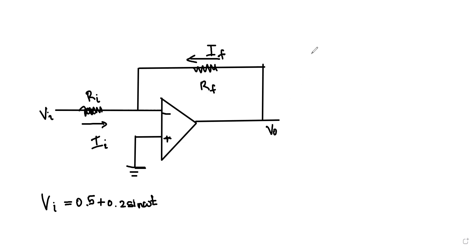Here we are going to learn about how an op-amp works as an inverting amplifier. In the name itself you can figure it out — it is going to amplify the signal. If you provide an input it is going to amplify the signal and also invert it, which means if you are providing a phase of zero it will output a phase difference of pi.